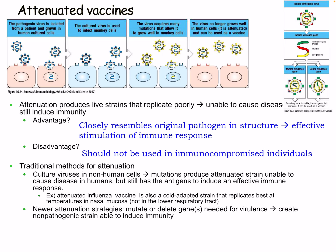Attenuated viruses are live strains that replicate poorly and are unable to cause disease but still induce immunity. The advantage is that they closely resemble the original pathogen in structure and effectively stimulate the immune response. The disadvantage is they should not be used in immunocompromised individuals — even though weakened, there is still a chance of infection. Traditional attenuation methods involve culturing viruses in non-human cells; the resulting mutations produce attenuated strains. For example, the attenuated influenza vaccine is a cold-adapted strain that replicates best at nasal mucosa temperatures. Newer strategies include mutating and deleting virulence genes to create non-pathogenic strains, though these can be more expensive.